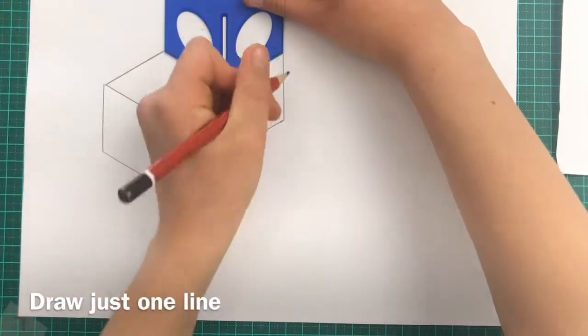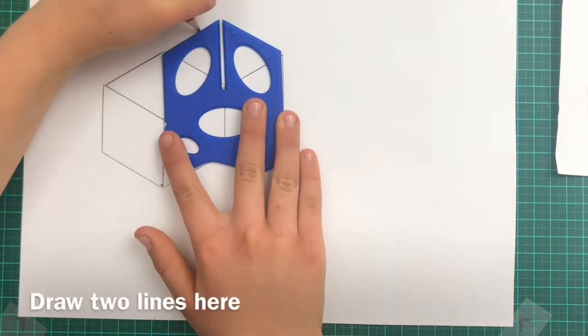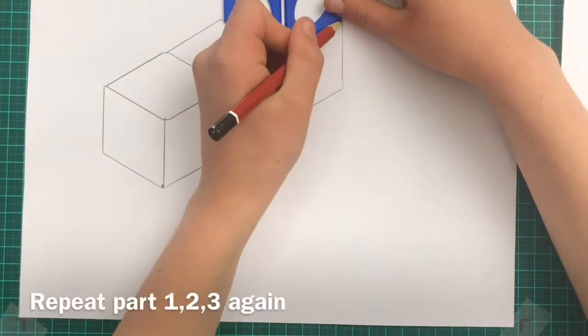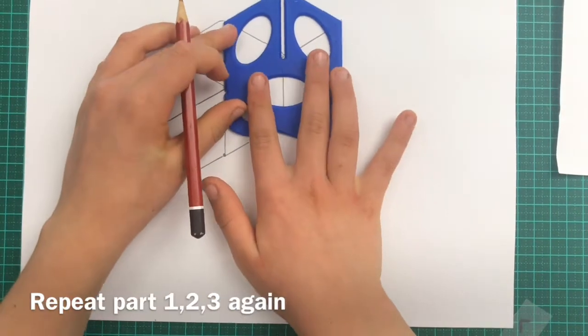Some of the lines are covered up, we only need to draw a few here. Just one there, and two at the top. Nice. All we're doing is doing half of the cube.